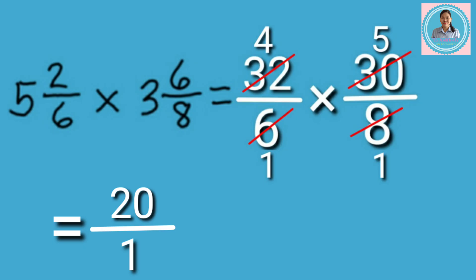The answer is 20 over 1. It is improper fraction, so we need to simplify it by dividing the numerator by the denominator. If we divide 20 divided by 1, of course, the answer is 20.